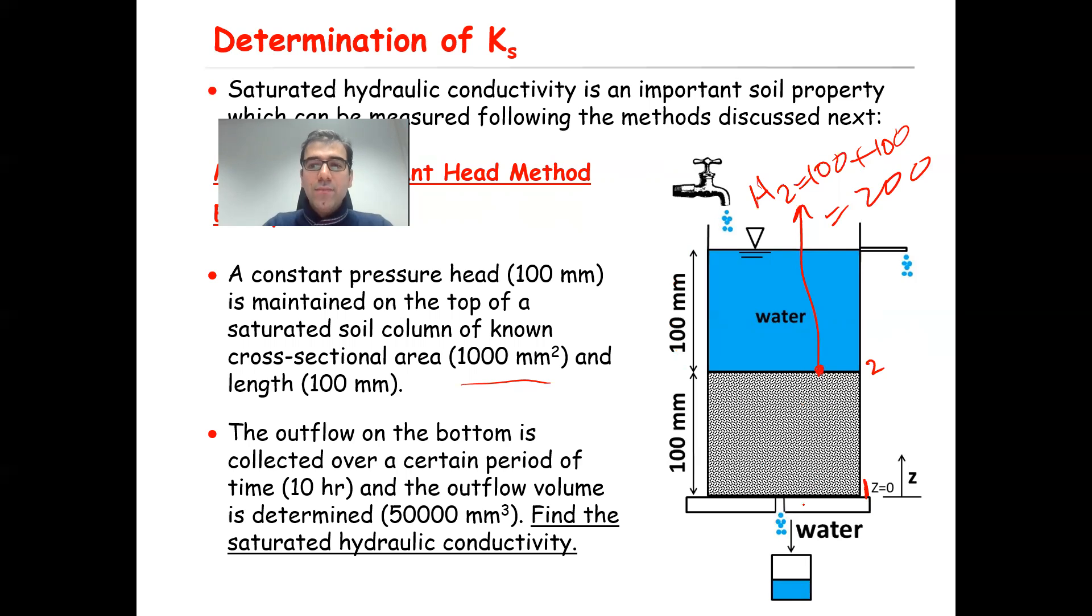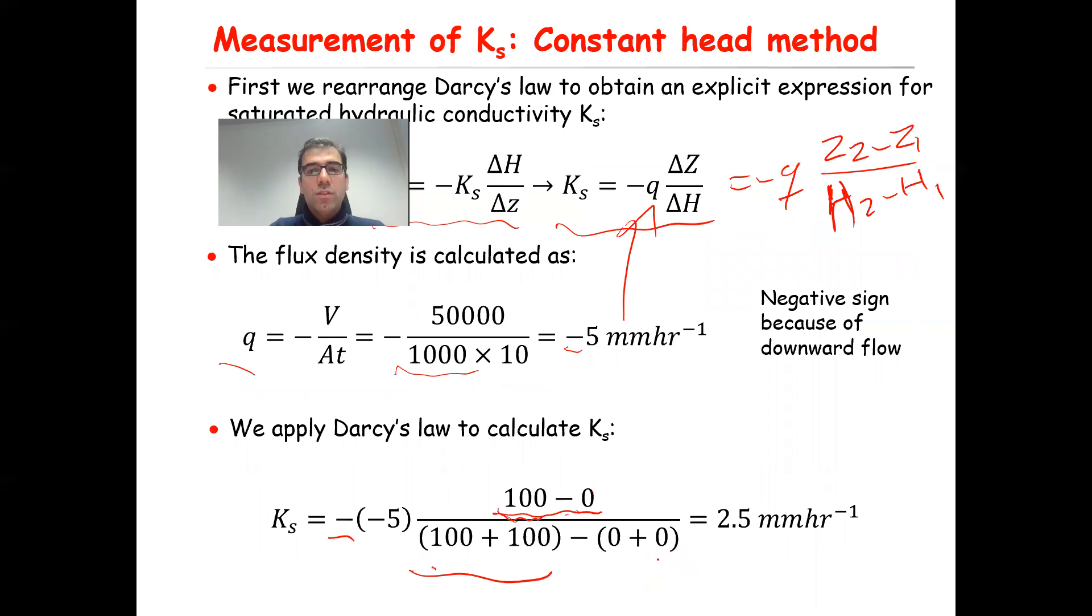You can do exactly the same for point one. Therefore, h1 will be equal to gravitational head, which is equal to zero here because it is located on the reference level, plus the hydrostatic pressure. And we already discussed that when you have flow exposed to the atmosphere, the pressure, the hydrostatic pressure, is basically equal to zero. That is zero plus zero equals zero. So h2 is equal to 200, h1 is equal to zero. So that is 100 plus 100 minus zero, which equals 2.5 millimeters per hour.